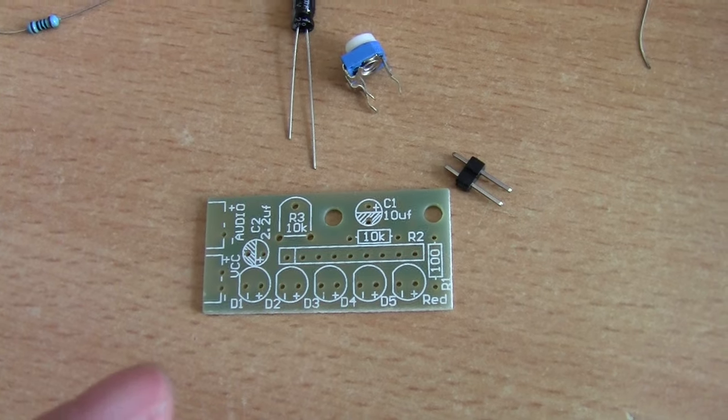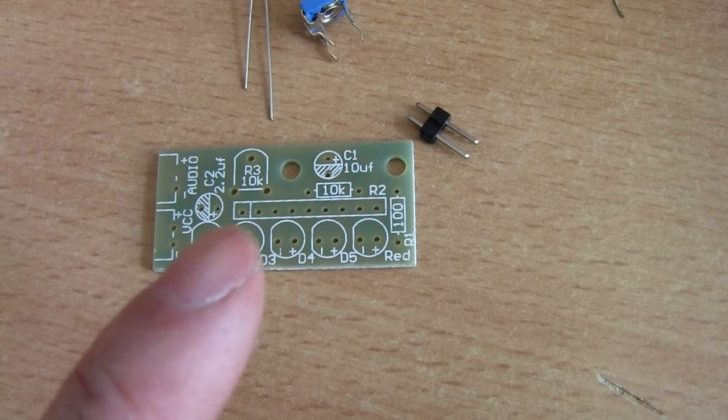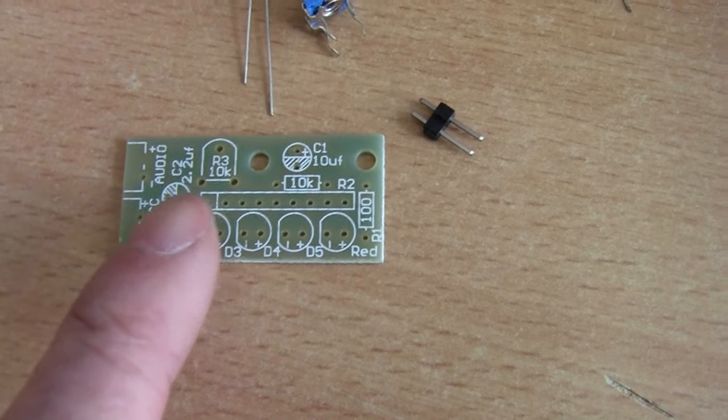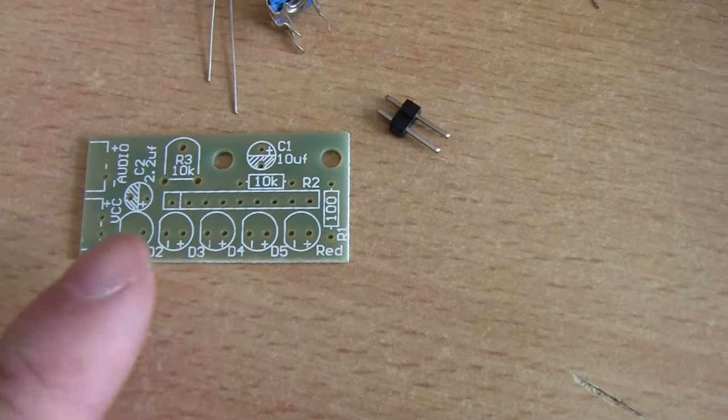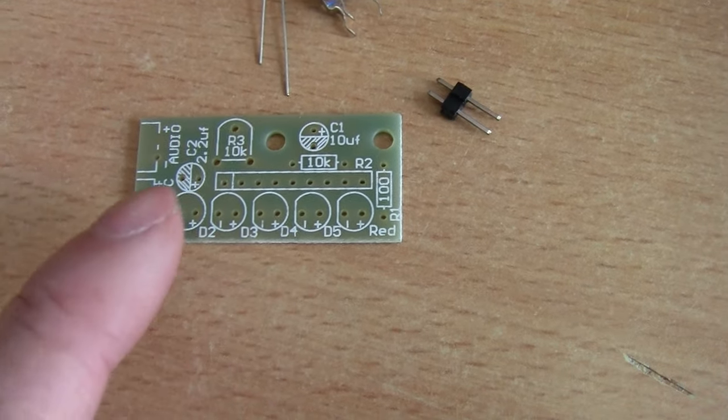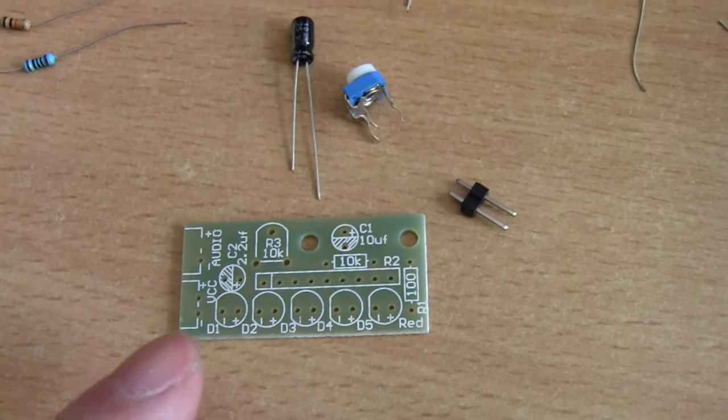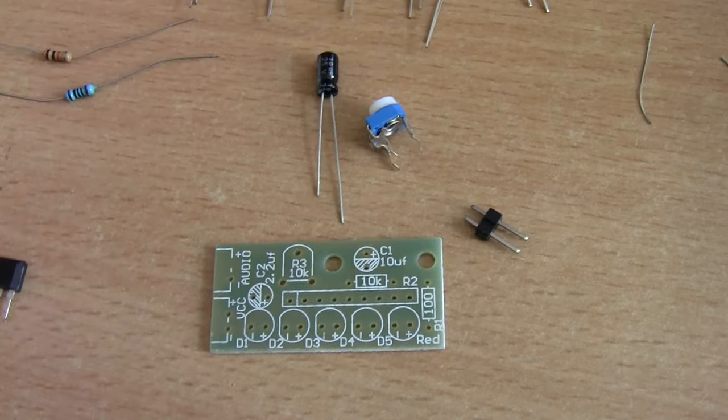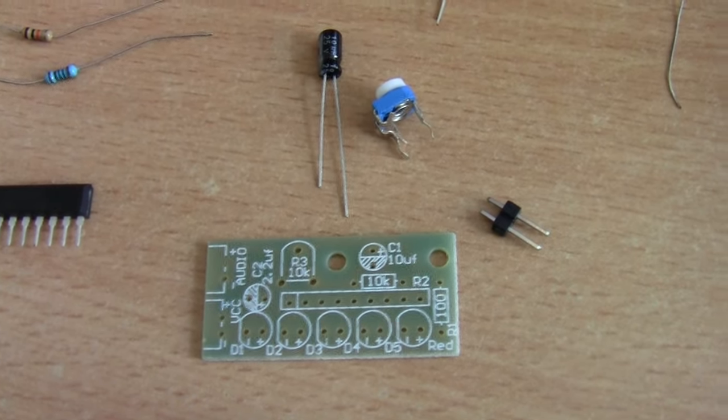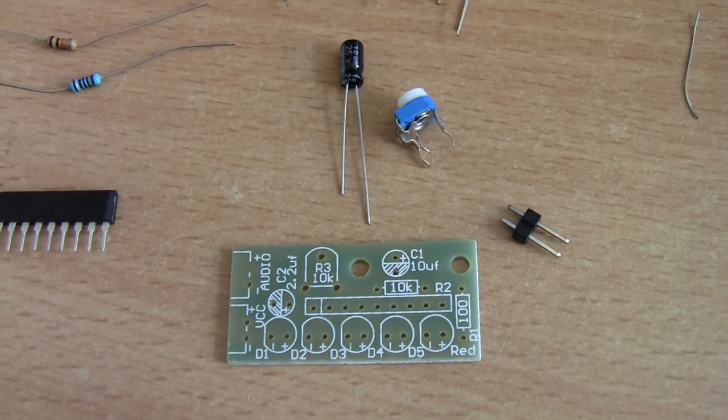I call this electronics by numbers. You have this small circuit board here with all the parts numbers on it, all the resistors, capacitors, and the chip. Basically, if you want to assemble this, just go by the parts numbers, plug it in there, solder, and you got yourself...